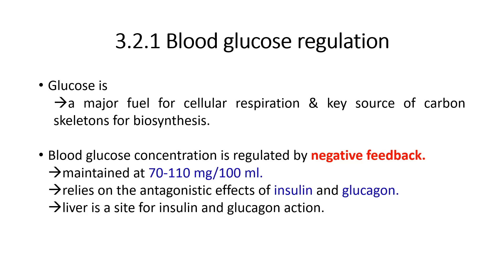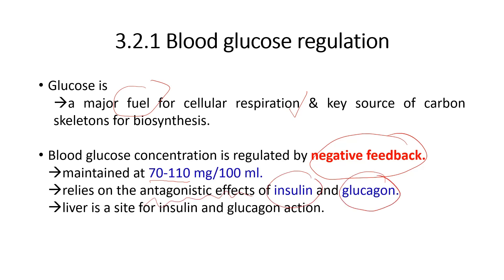Blood glucose regulation: glucose is referred to as the major fuel for cellular respiration and the key source of carbon skeleton for biosynthesis. Blood glucose concentration is regulated by negative feedback mechanism. The normal blood glucose concentration is maintained at 70 to 110 milligrams per 100 ml of blood. This relies largely on the antagonistic effect of insulin and glucagon, and the liver is the site for insulin and glucagon action.